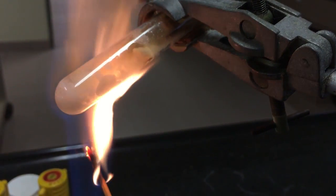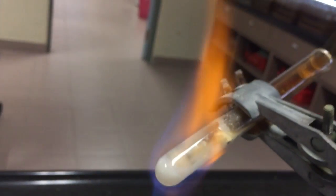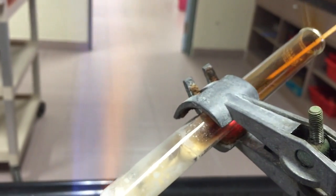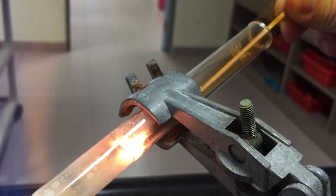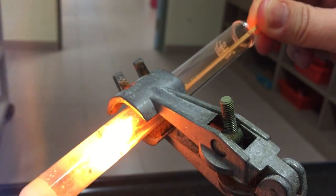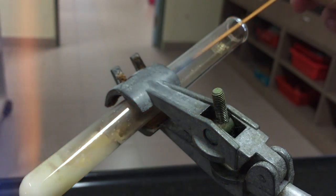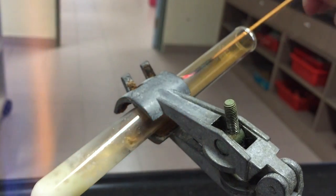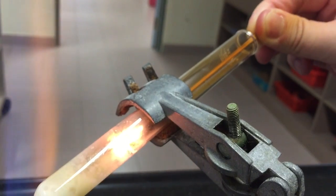We will now test for the presence of oxygen gas. Prepare a glowing splint and place the glowing end of the splint into the test tube near where the decomposition is occurring. Notice how the oxygen relights the glowing splint.